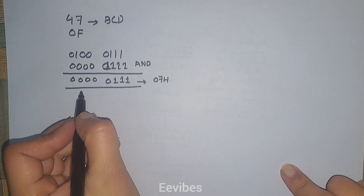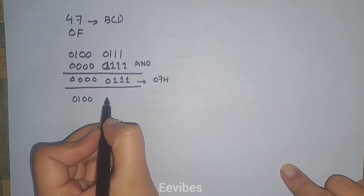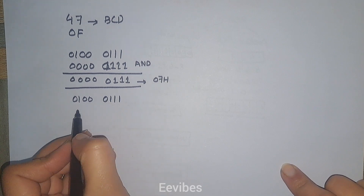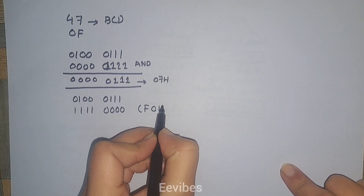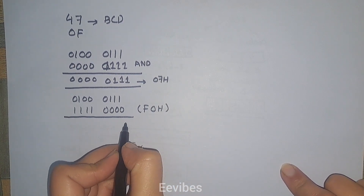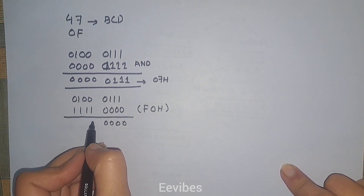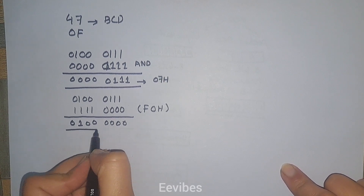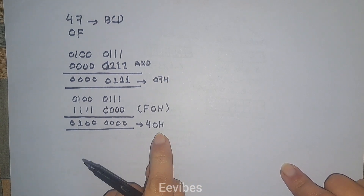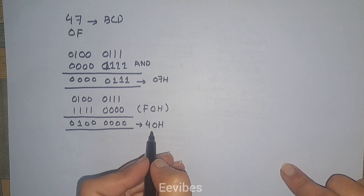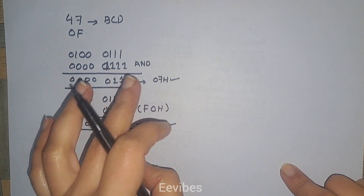Similarly, if I AND the BCD number 47 hex — which is 0100 0111 — with F0 hex, which is 1111 0000, then the lower bits will be masked to zero and the result is 0100 0000, which is 40 hex. Now both digits are in unpacked format.